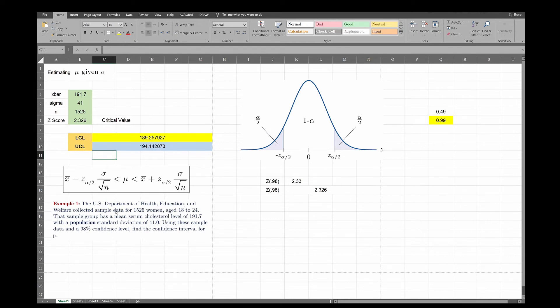So you may never know what the average cholesterol level is for all women in the United States ages 18 to 24, could be like 100 million of them. But based on this 1500 samples that I've collected, I am confident, I'm 98% confident that the actual mean, the actual average cholesterol level is between 189 and 194.